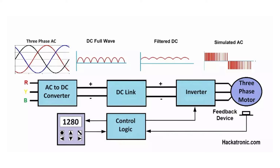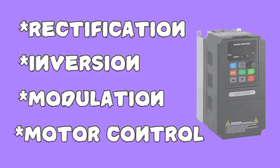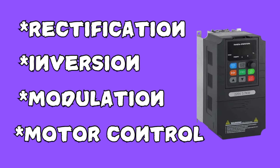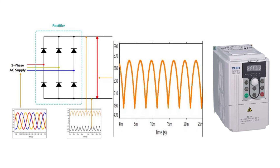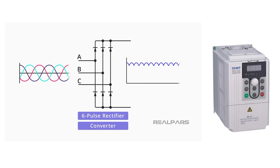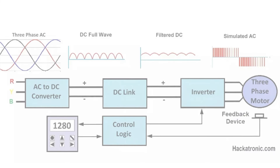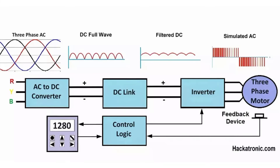The first step is rectification, the second is inversion, the third is modulation, and the fourth is motor control. In the first step — rectification — the AC power from the grid is converted to DC power using a rectifier circuit. In the second step — inversion — the DC power is inverted back to AC power using an inverter circuit.